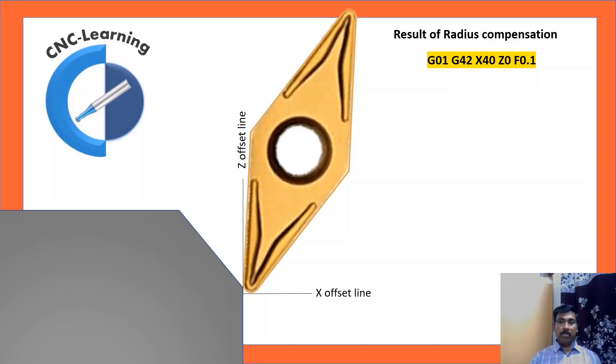If you use radius compensation, what will it do? Let us examine. G01, G42, X40Z0, F0.1. The tool is positioned with G42 command.